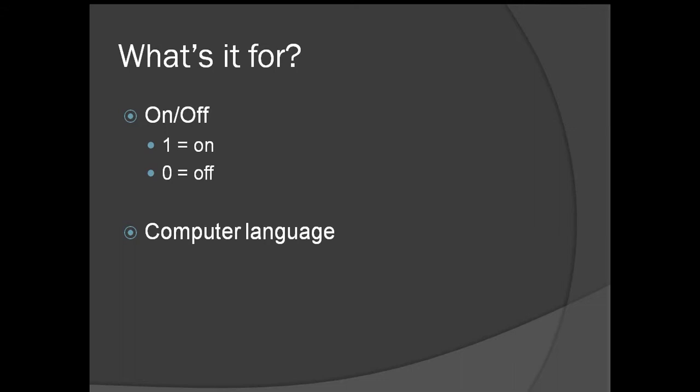For us to better understand what's going on, we put a value for this state on and off. We use one for on and zero for off. So it's better for us to see instead of reading on, off, on, off, on, on, off, off.